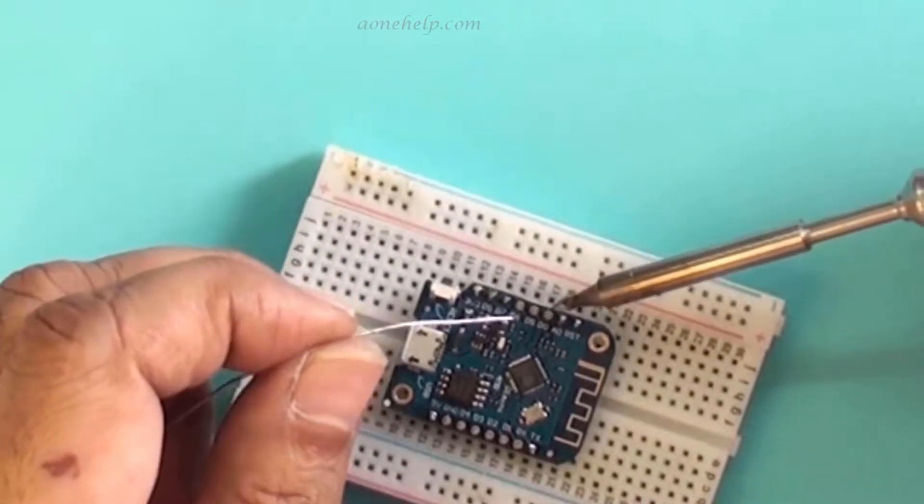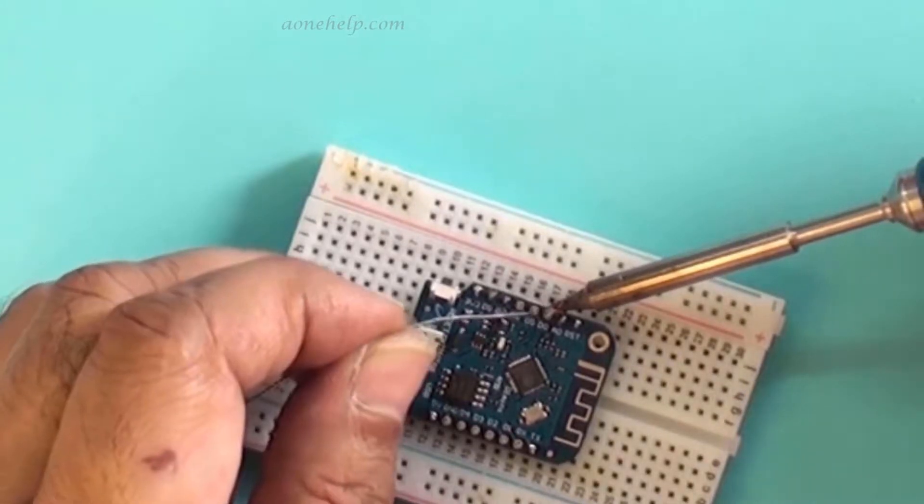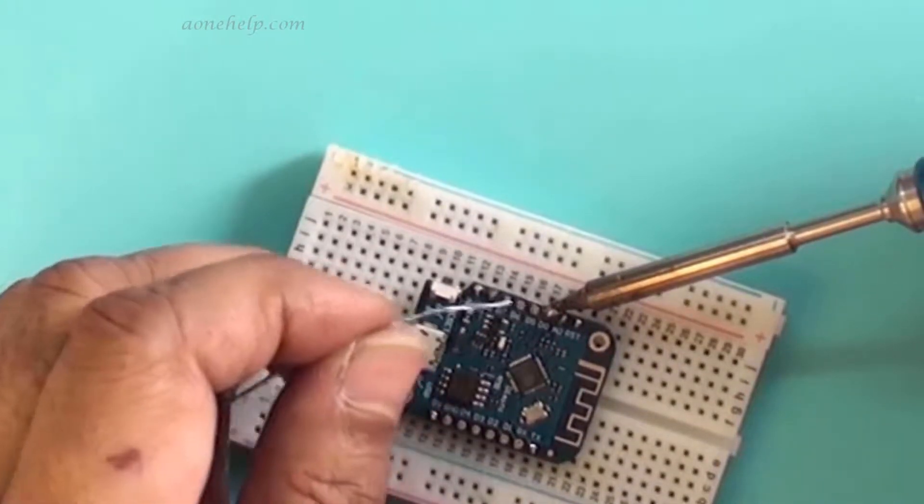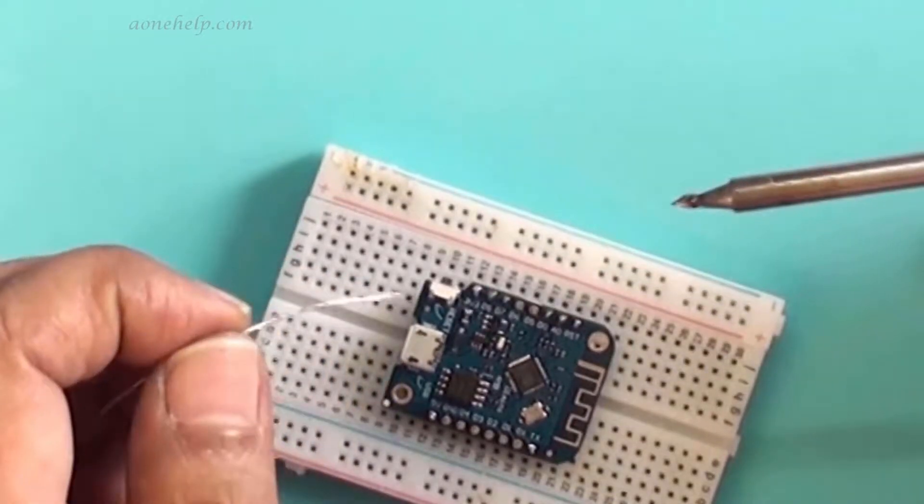A proper solder joint will be shiny. In case our solder joint is not shiny, we can reapply flux and resolder it.